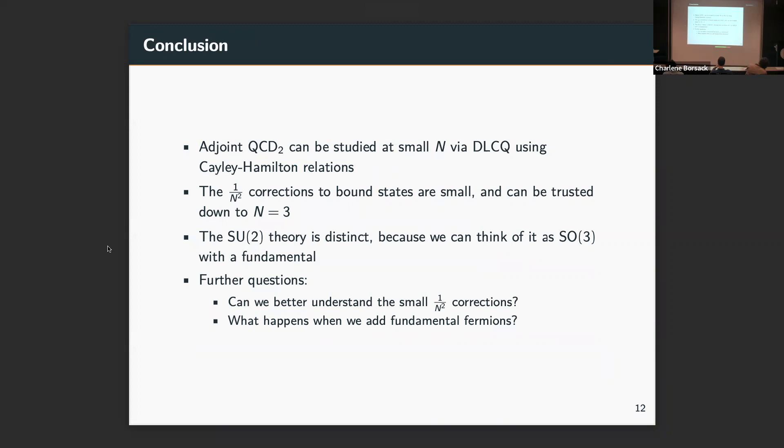To wrap up, we can do DLCQ at small N for these gauge theories using this Cayley-Hamilton method. The 1 over N squared corrections are quite small but seem to work pretty nicely. SU(2) is distinct both physically and computationally because we can think of it as this SO(3) theory with a fundamental. Going forward, we'd like to better understand the 1 over N squared corrections. One, why are they so small? And two, can we develop them more analytically? And we can see what happens when we add fundamental fermions. The same computational methods should apply, but then we can actually consider mesonic states and the string breaking and the string tension in those states. That will be of great interest. Thank you.